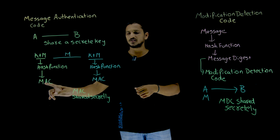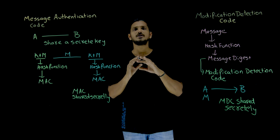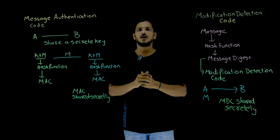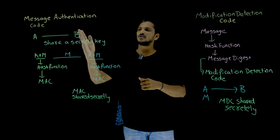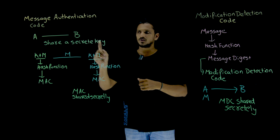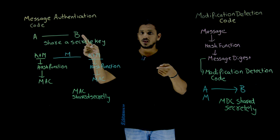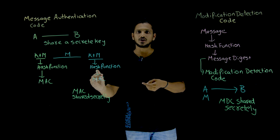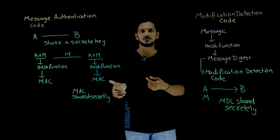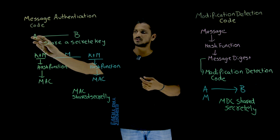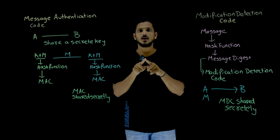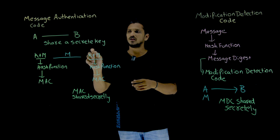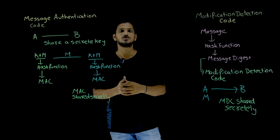Once A generates this Message Authentication Code, it should be secretly shared with B. A sends the MAC to B, then sends the message openly. Once the message reaches B, because B already knows the secret key, he adds the key with the message and sends key+message into the hash function. The hash function generates a message digest — the MAC. Whatever B generated and whatever MAC he received from A — if both are equal, then definitely the message was sent from A, because both are using the same key.